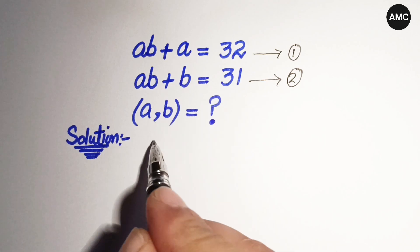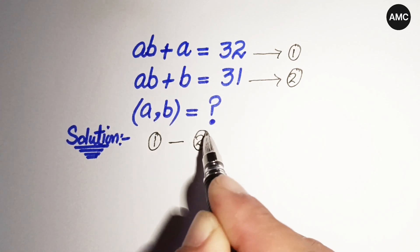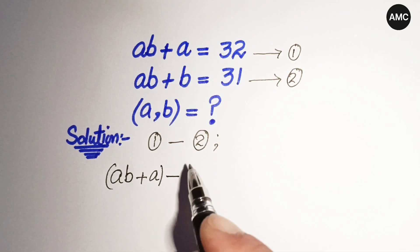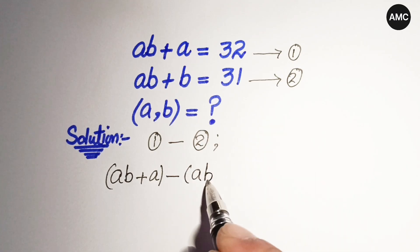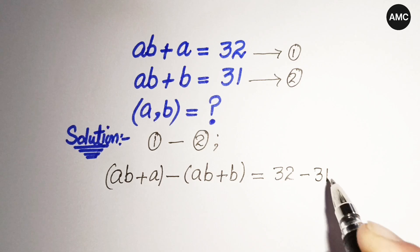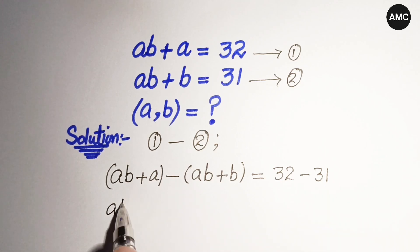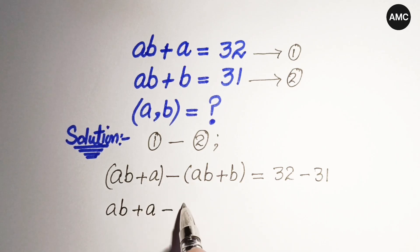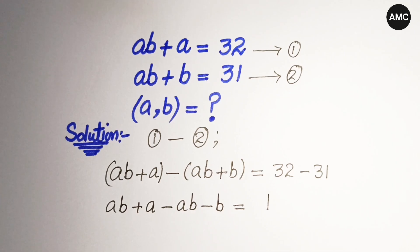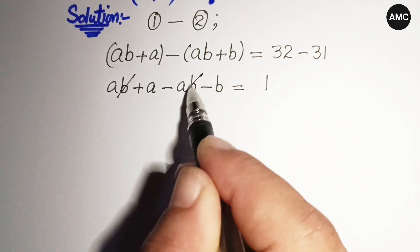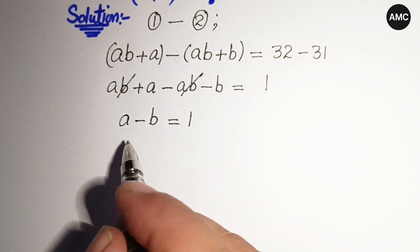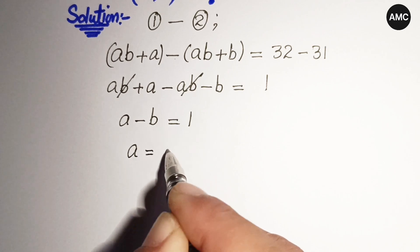If we subtract equation 2 from equation 1, the left hand side of equation 1 is ab plus a, minus the left hand side of equation 2 which is ab plus b, equals 32 minus 31. So ab plus a minus ab minus b equals 1. The ab terms cancel, giving us a minus b equals 1, which means a equals b plus 1.